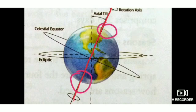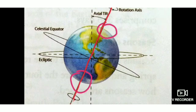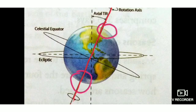Let us do a quick recap. The earth moves in two ways: rotation and revolution. Rotation refers to the spinning movement of the earth around its own axis — an imaginary line passing from the north pole to the south pole through the center of the earth. This axis is not straight but is a slanting line tilted at an angle of 23 and a half degrees. The earth takes one day, or 24 hours, to complete one single rotation. Please go through the video once again to understand the concept better. We will continue with this chapter in the next video. Bye.